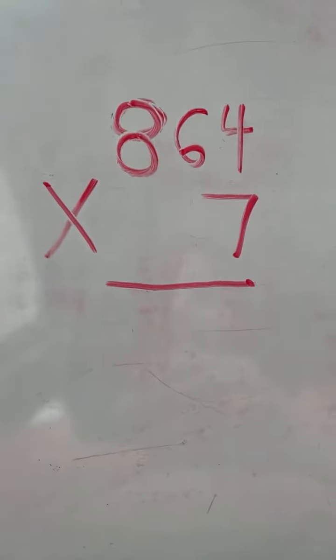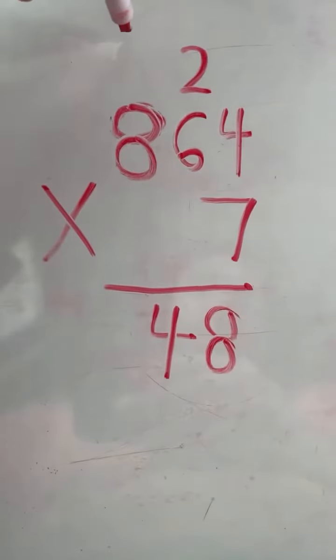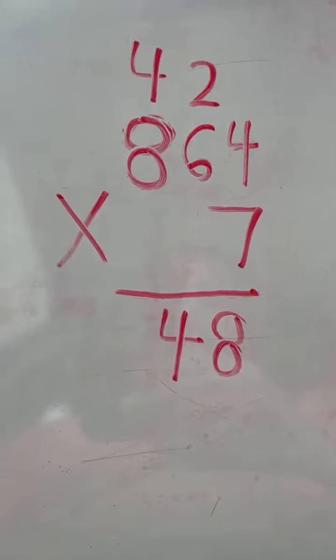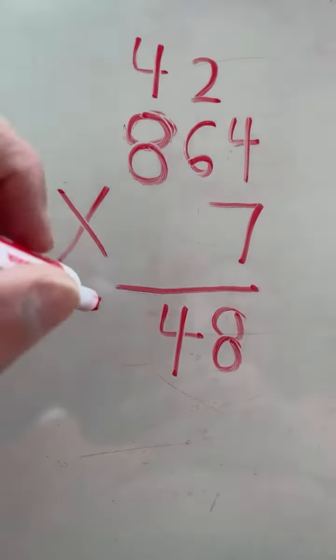Six times seven equals forty-two, plus two equals forty-four. Four, carry the four. Eight times seven equals fifty-six, plus four equals sixty.